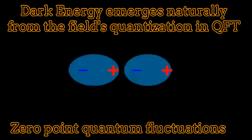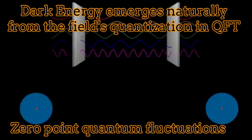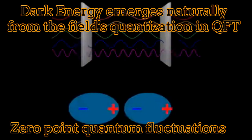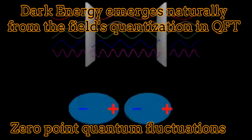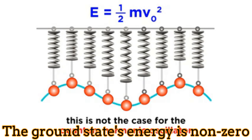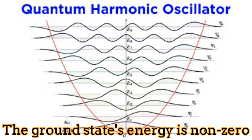What is truly remarkable and impressive is that dark energy, or vacuum energy, emerges naturally from the quantization process in quantum field theory. It emerges from the zero-point quantum fluctuations. The algebra in this quantization process emerges from the same algebra of the quantum harmonic oscillator, where there is also a non-zero energy for the ground state.